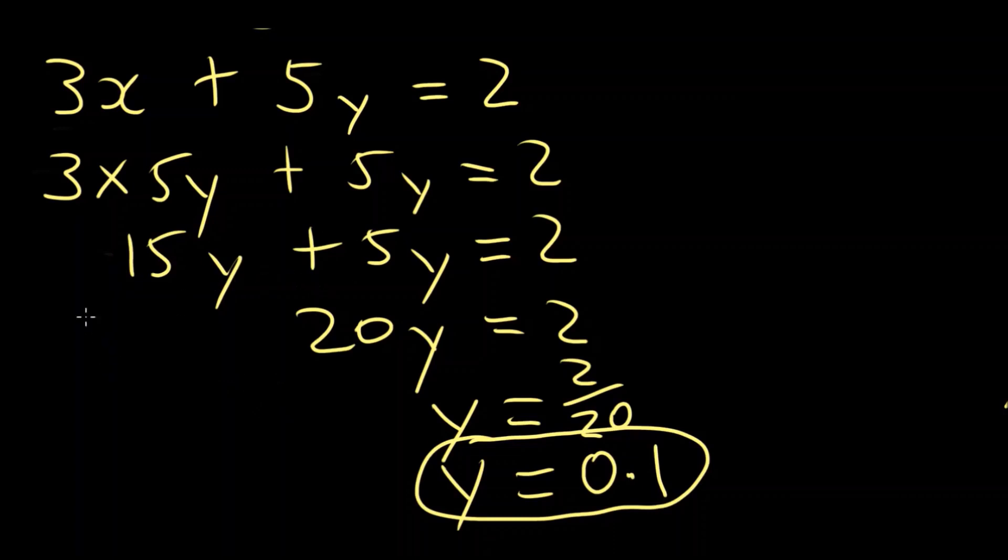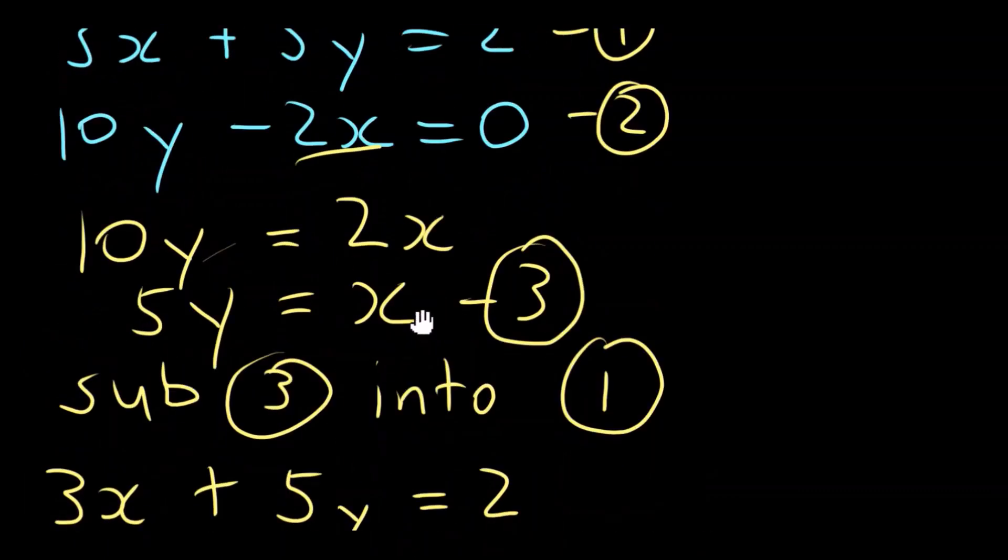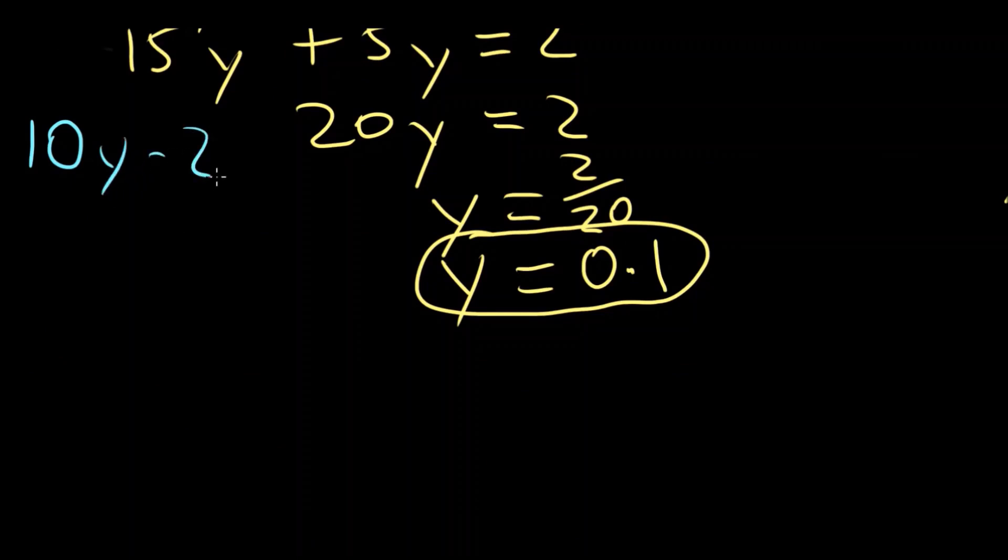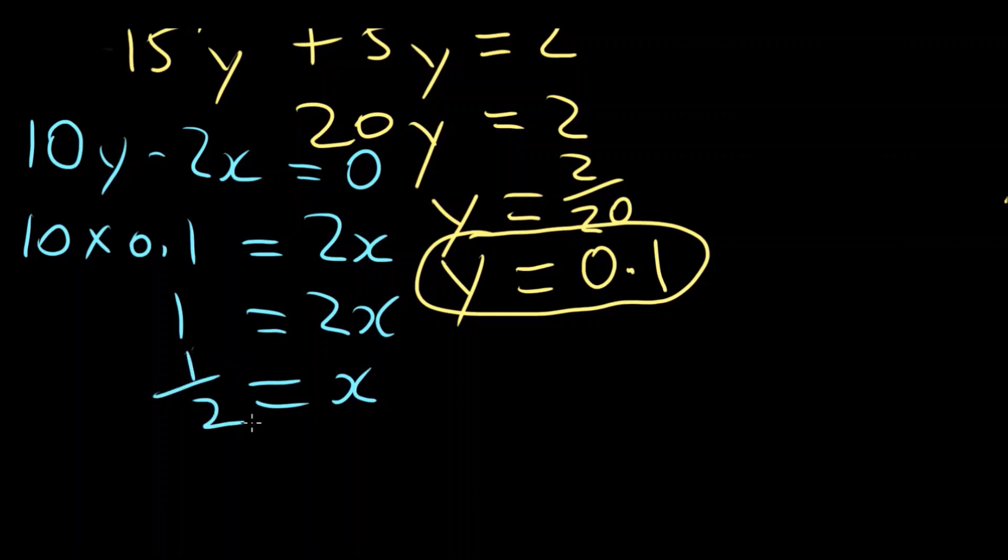Now, knowing that y equals 0.1, we can go back to one of our equations. 10y minus 2x equals 0. We have our new y value. So 10 times 0.1 minus 2x. Let's get the 2x on the other side, equals 2x. 10 times 0.1 is 1. 1 equals 2x. x will equal 1 over 2 or 0.5. There we go. y equals 0.1 and x equals 0.5.